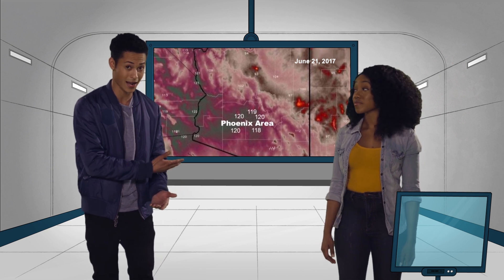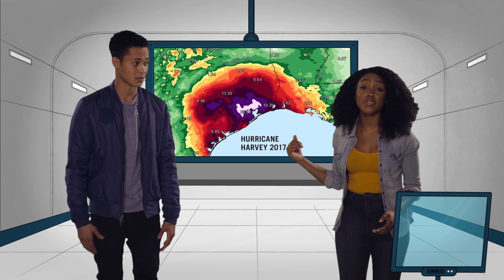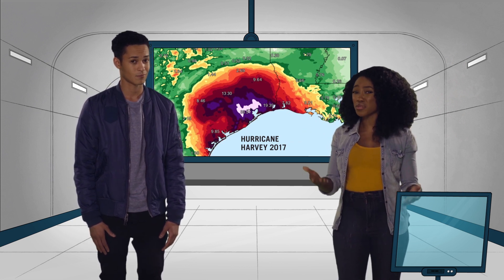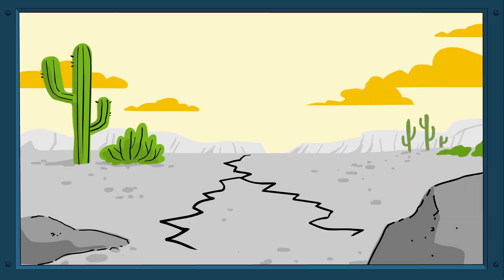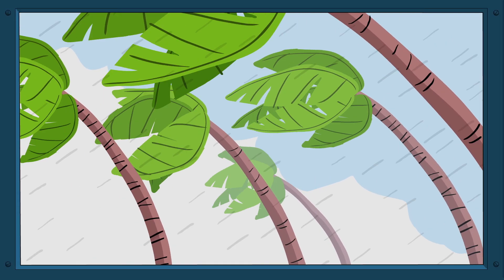We're breaking records left and right. In 2017, Arizona got so hot that the weather map ran out of colors. Hurricane Harvey dumped so much rain on Houston that the rain maps had to come up with new colors too.